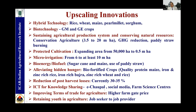ICT for knowledge sharing, using social media and farm science centers — India has what we call Krishivigyan Kendras, with one farm science center located in each of the 715 districts. They serve the purpose of front-line demonstration of cutting-edge technology developed by institutions in the country to reach farmers at the earliest. Improving terms of trade for agriculture — meaning higher farm gate prices — is important. Retaining youth in agriculture, making them from job seekers to job providers, is another major challenge being addressed with the Entrepreneurship Development Programme.